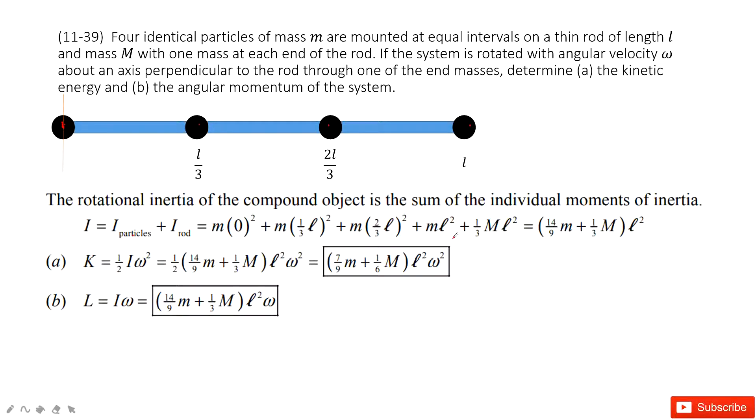So we add them together. And then we also need to consider the moment of inertia for this rod, one third M L squared. And then add them together. We get the total moment of inertia for this system.